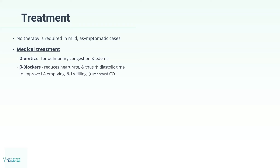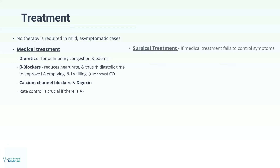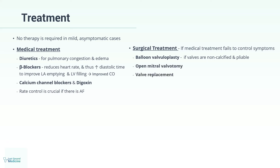Treatment. No therapy is required in mild, asymptomatic cases. Medical treatment includes diuretics for pulmonary congestion and edema. Beta-blockers are used to decrease heart rate, thereby increasing diastolic time to improve left atrial emptying and left ventricular filling and cardiac output. Calcium channel blockers and digoxin can be used as alternatives. Heart rate control is especially crucial in patients with AF. If medical treatment fails to control symptoms, balloon valvuloplasty is done where valves are pliable and non-calcified. Other surgical options include open mitral valvotomy or valve replacement. Thromboembolism prophylaxis with warfarin is considered in patients with AF.